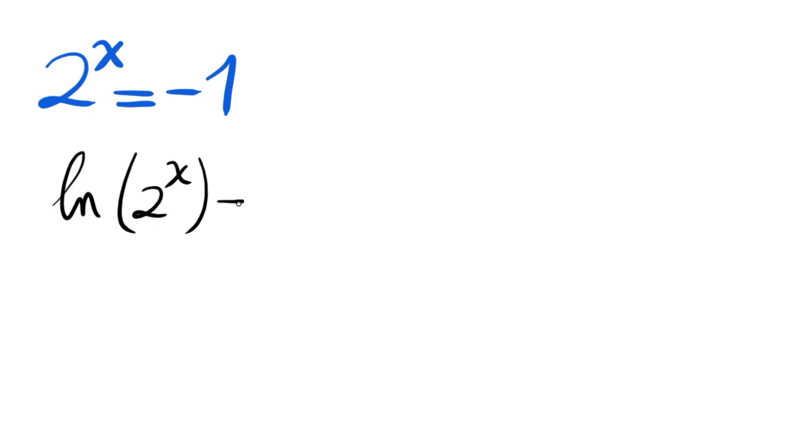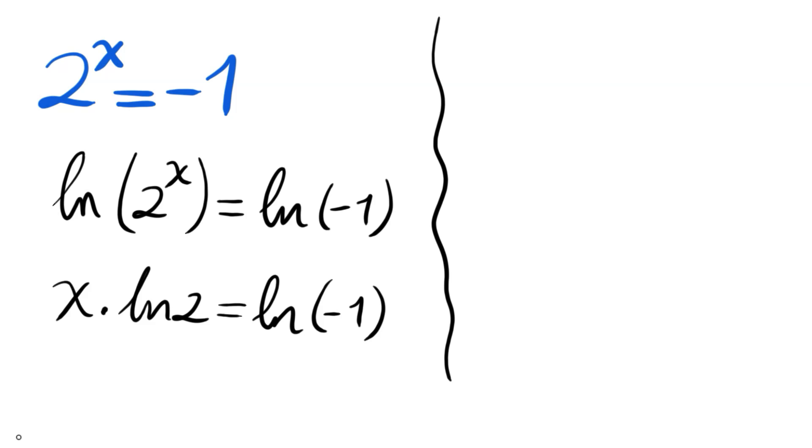The left hand side will become x times ln 2, but the right hand side here is another interesting question: ln(-1). Let me find what is ln(-1).